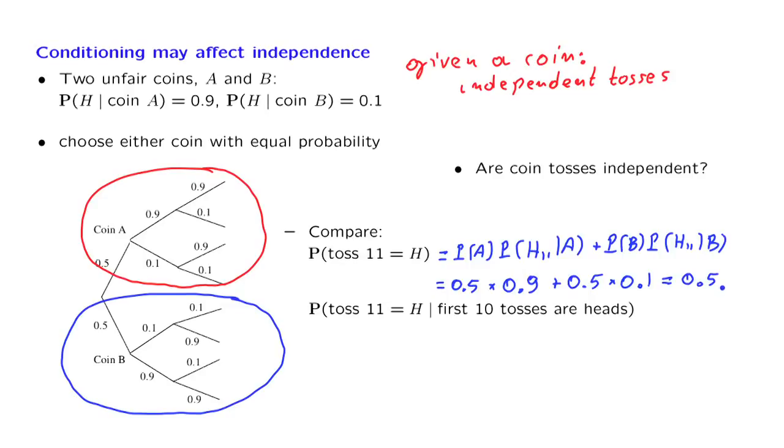Which makes perfect sense. We have coins with different biases, but the average bias is 0.5. If we do not know which coin it's going to be, the average bias is going to be 0.5. So the probability of heads in any particular toss is 0.5 if we do not know which coin it is.